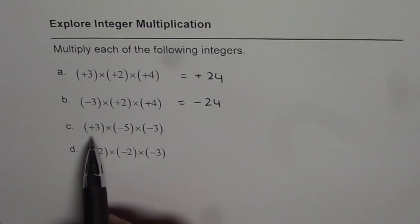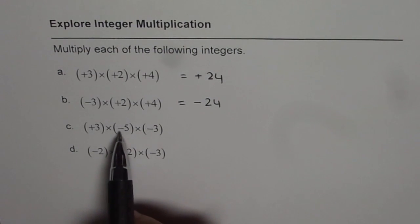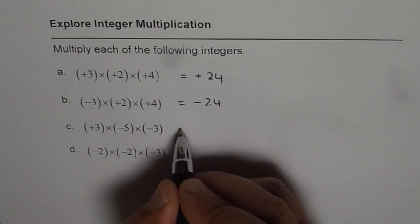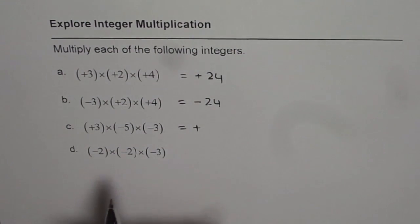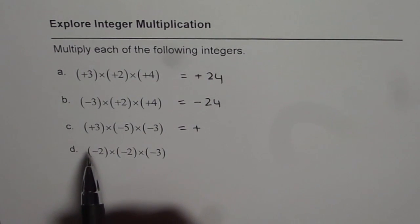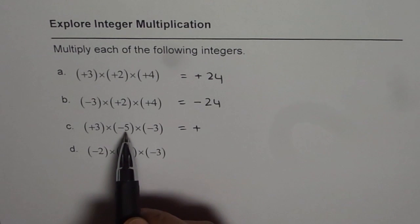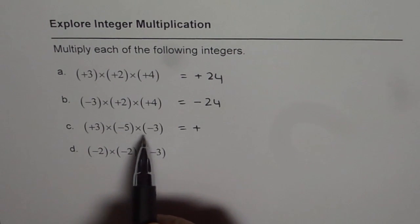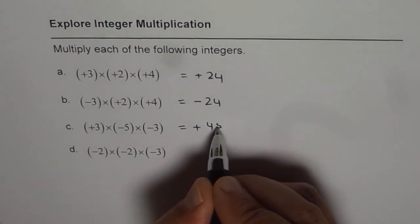Now, let us check the sign. Plus times minus is minus, and minus times minus will give us plus. So we will get a positive integer, and the value of this integer is three times five as fifteen, and fifteen times three as forty-five. So we get forty-five positive.